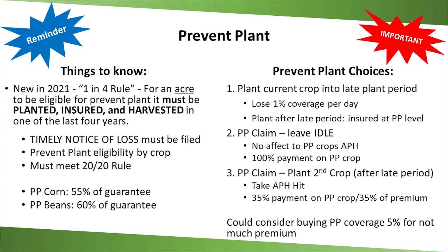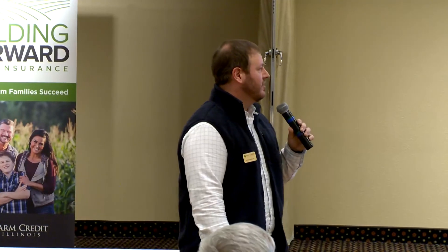For the corn example, final plant date around here is June 5th. You can start submitting prevent plant claims then. You can still plant corn because you have the 20-day late plant period — you just lose 1% of coverage a day up until June 25th. But even if you're thinking about it around the beginning of June, we need to know so we can get a plan in place. We've got to run your prevent plant eligibility by crop, and we must know if it meets the 2020 rule — the lesser of 20 acres or 20% of that unit.